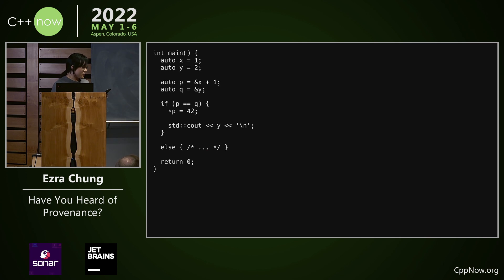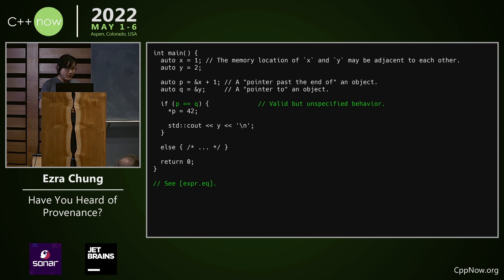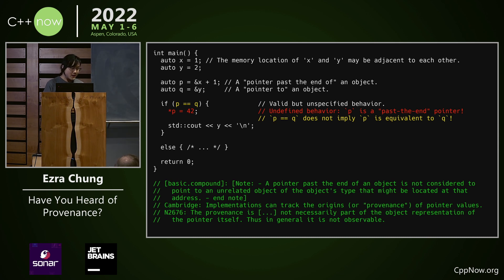Consider the following example where local variables x and y happen to be allocated adjacent to each other in memory. We initialize a pointer p as a past-the-end pointer to x, and a pointer q as a pointer to y. It is valid but unspecified behavior to equality-compare two pointers from unrelated objects or arrays, so this expression may return true. In both C and C++ today, it is undefined behavior to dereference a past-the-end pointer p, even if it is bytewise equal to a valid pointer to, for example, object q. See the reference standards section basic.compound for the details.